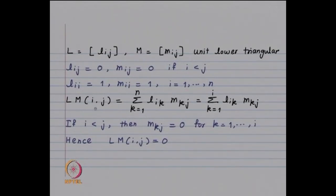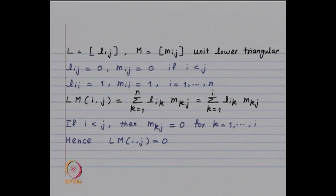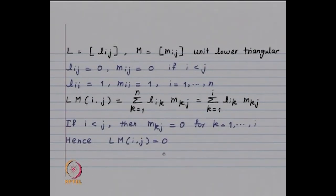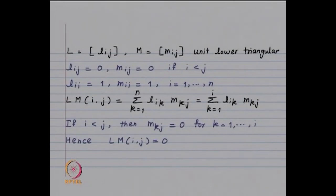We are interested in the elements of LM when i < j. For the case i < j, M_{kj} will be 0 for k going from 1 to i, because for k = 1 to i, j will be bigger than k. Since M has the property that M_{ij} = 0 if i < j, the M_{kj} terms in the summation are all going to be 0. So you get (LM)_{ij} = 0. Just as in the case of L and M, when i < j the elements (LM)_{ij} are equal to 0.